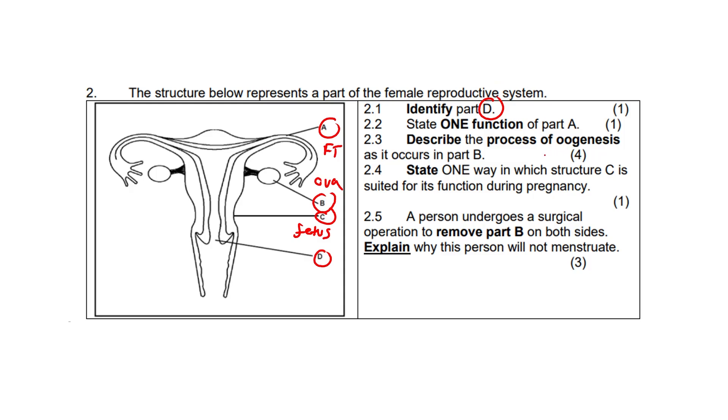Firstly, diploid cells in the ovary undergo mitosis to form numerous follicles. At the onset of puberty and under the influence of FSH, one cell inside a follicle enlarges and undergoes meiosis. Of the four cells that are produced, only one survives to form a mature haploid ovum.